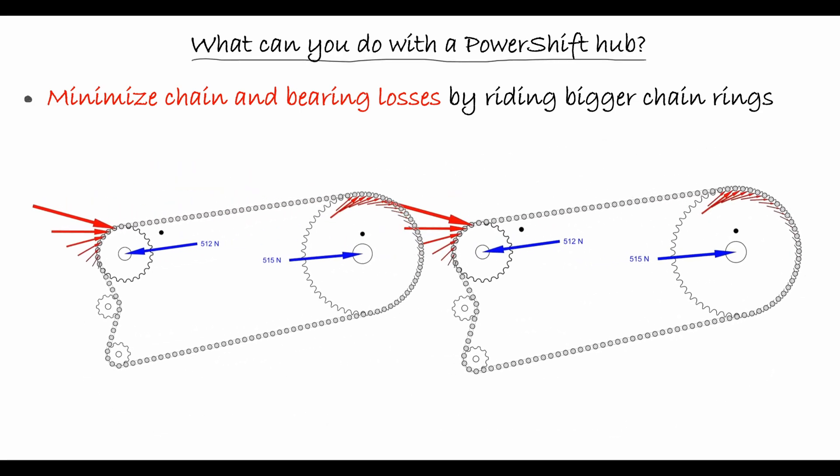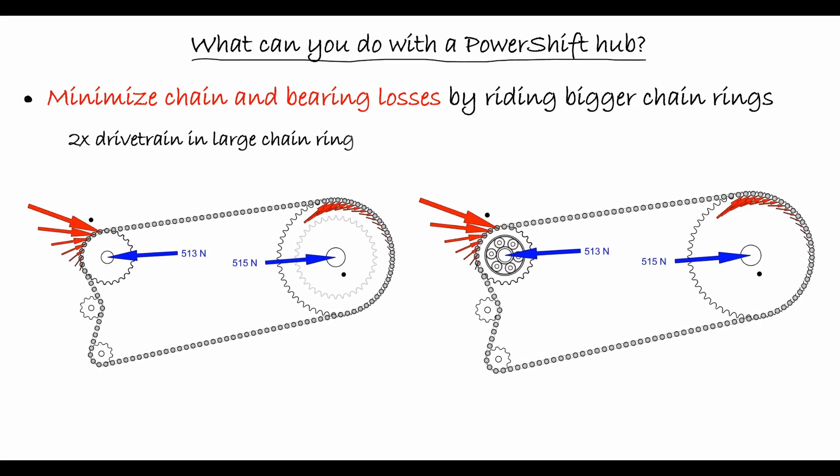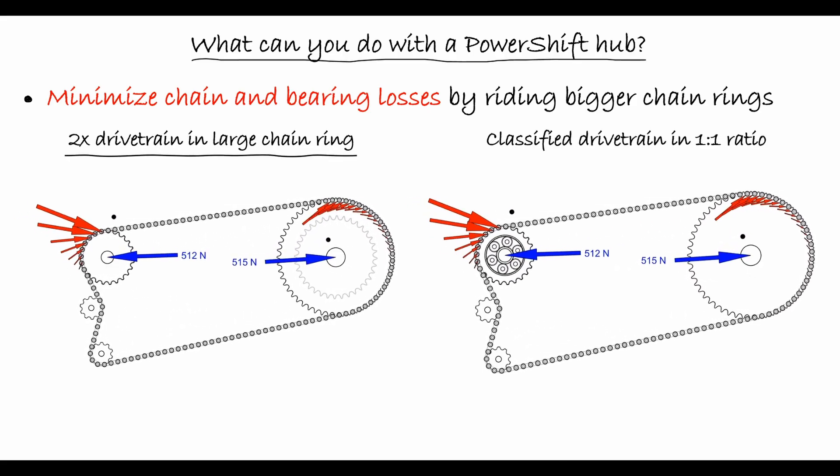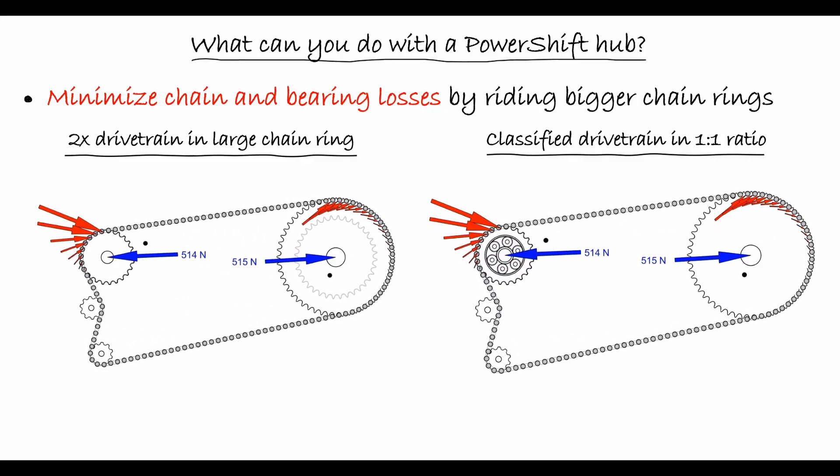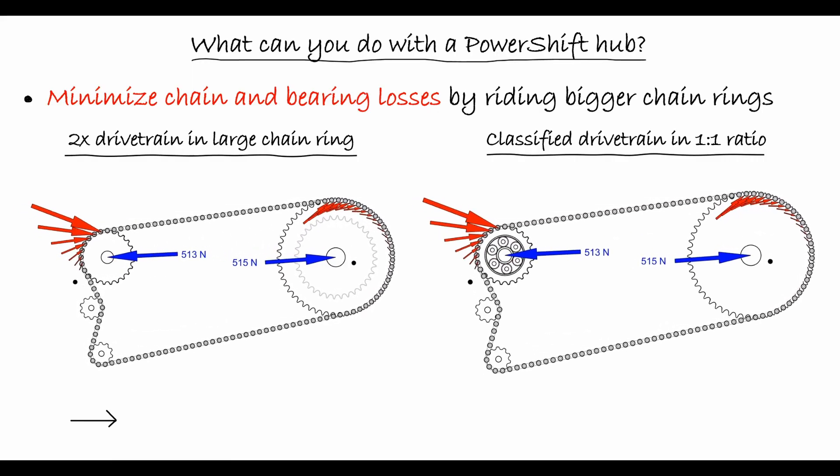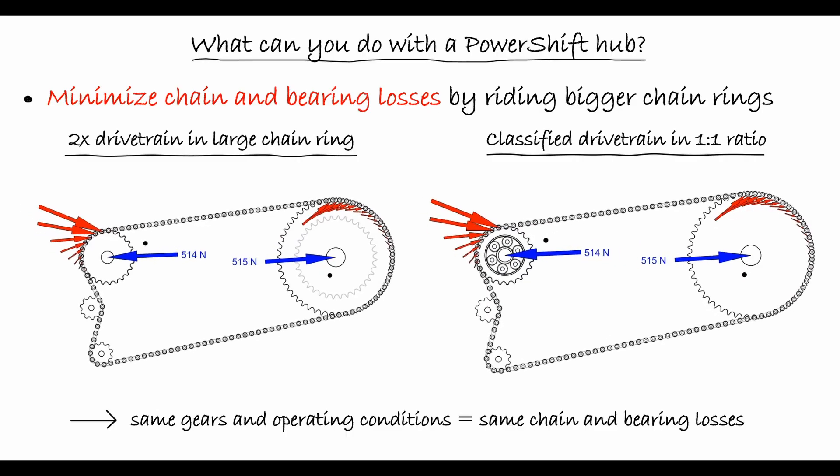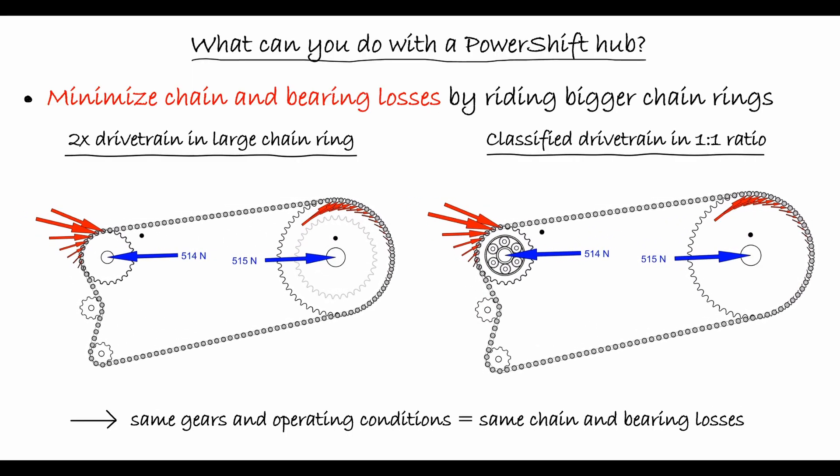Let's consider two equivalent drivetrain configurations to illustrate this point. On the left, we have a so-called 2x system with two chainrings, and on the right we have the Classified PowerShift system with a single large chainring. When the 2x system is operated in the larger chainring and the PowerShift system is in its one-on-one ratio, the gears and operating conditions in both drivetrains are identical, and so are the losses.